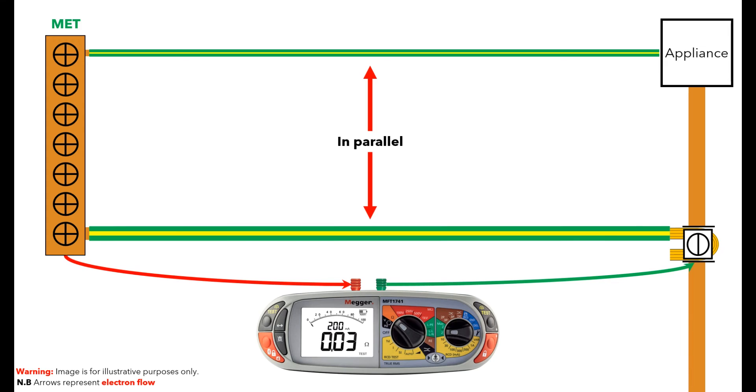If we bring that back to the simplified model, then we would have the following arrangement. We now have a parallel path for the electrons to flow down. This time the electrons have two paths that they can travel down, although more will still travel down the main bonding conductor due to the bigger CSA.